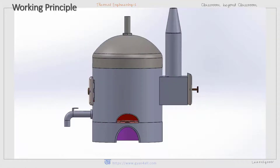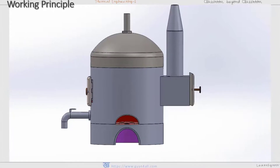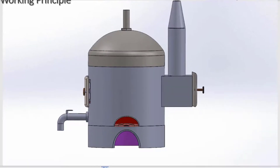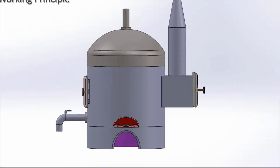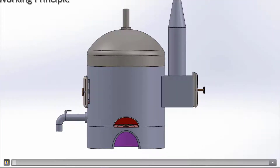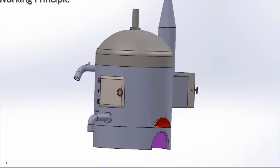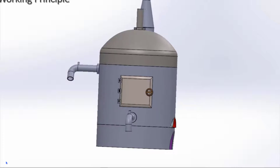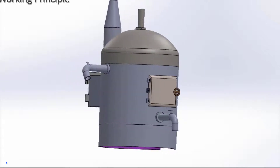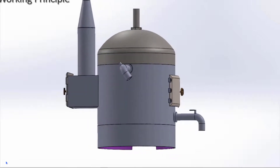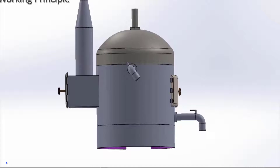Let us understand the construction and working principle of a Cochrane boiler. Have a look at this model of a Cochrane boiler to identify the main components and understand the working principle. Not all mountings are shown, as those were mentioned in the previous video on the simple vertical boiler. Only the arbitrary positions of the blow-off cock and feed check valves are shown here.